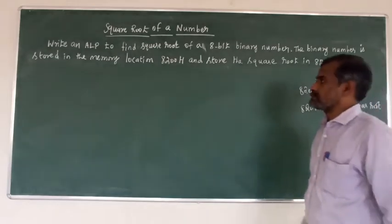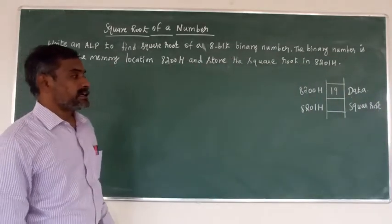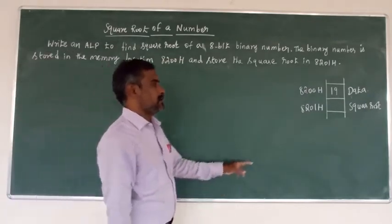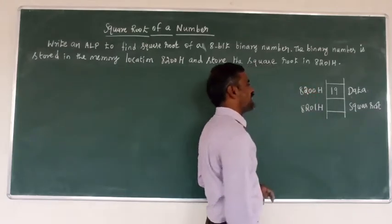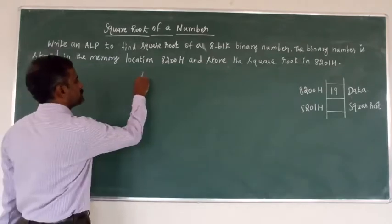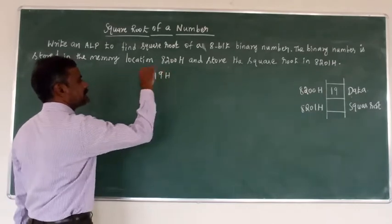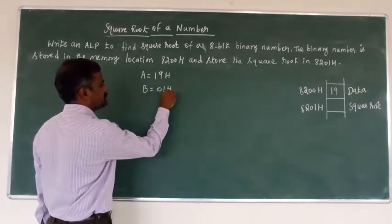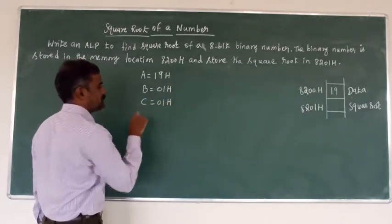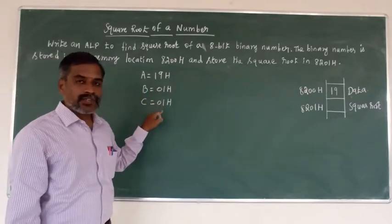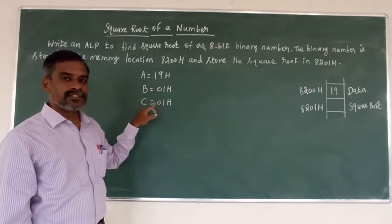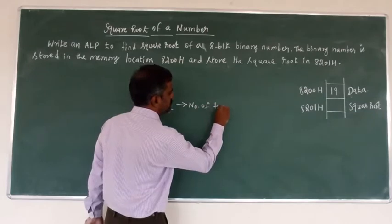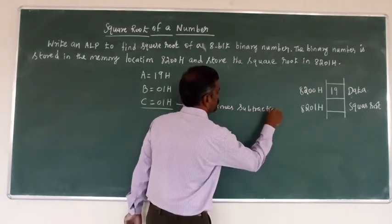Here is the logic to find the square root of a given number. First, load the 8-bit data directly to the accumulator. Initialize the A register with 19H. Set the B register to 01H and the C register also to 01H — both initially set to 01. The C register is used to count the number of times subtraction is performed.